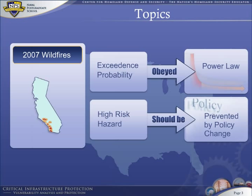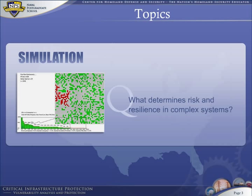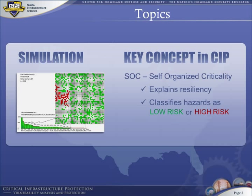A simple model of forest fires is proposed and computer simulated so that we can understand what determines risk and resilience in complex systems such as forests and other infrastructure systems. This simulation illustrates a key concept in the scientific study of critical infrastructure protection: self-organized criticality. SOC is a fundamental principle of risk and explains why some infrastructure is more resilient than others. It also divides various kinds of hazards into two classes: low and high risk.